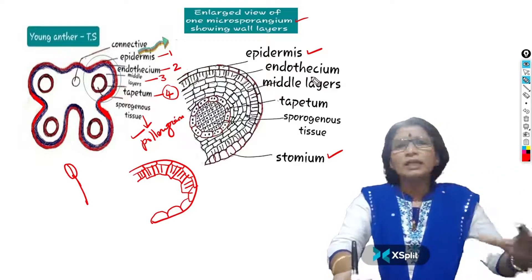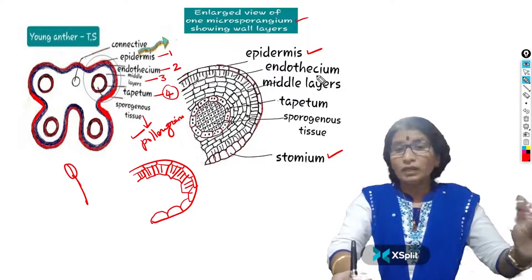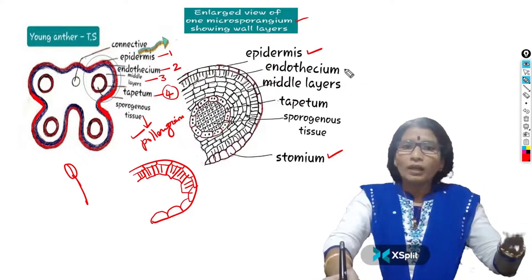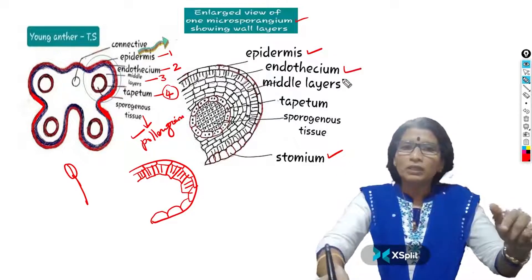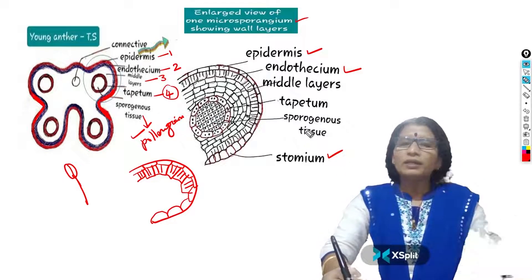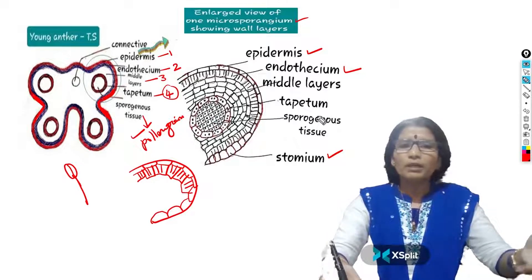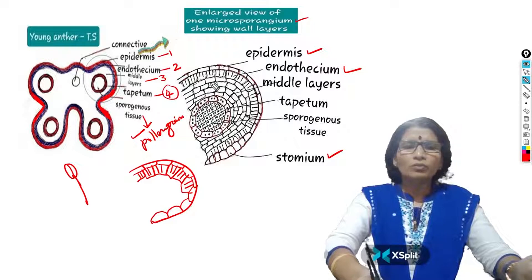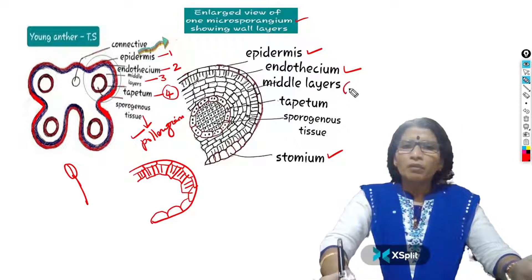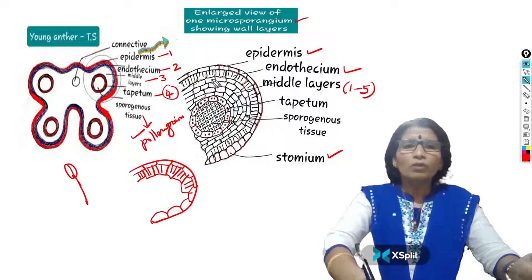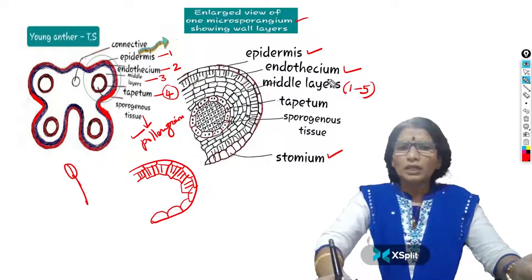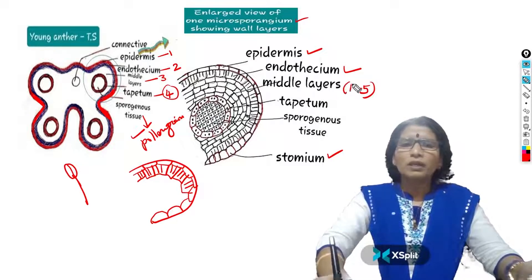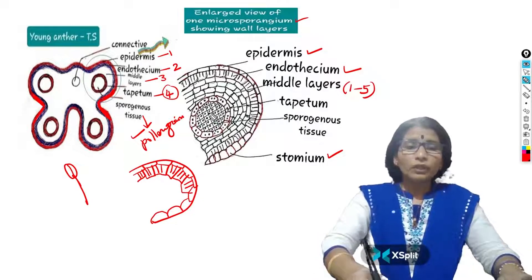Endothecium cells also easily take in and lose water at the time of anther dehiscence. So, endothecium and stomium — these two cells help in the dehiscence of the anther and liberate pollen grains. Below the endothecium, the middle wall layers are present. Middle wall layers usually have a minimum of one to a maximum of several rows. There is no fixed number about how many layers; just write the point.